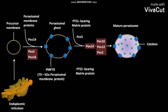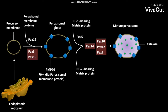The PTS-2, or peroxisomal targeting sequence 2, bearing matrix protein also translocates into the peroxisomal ghost with the help of a cytosolic receptor called PEX-7 and proteins like PEX-14, PEX-10,